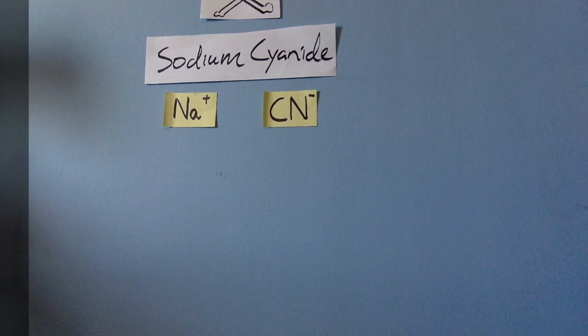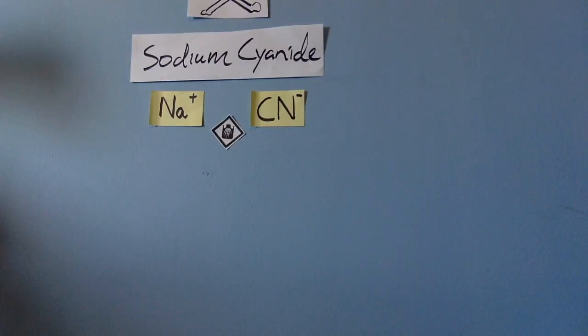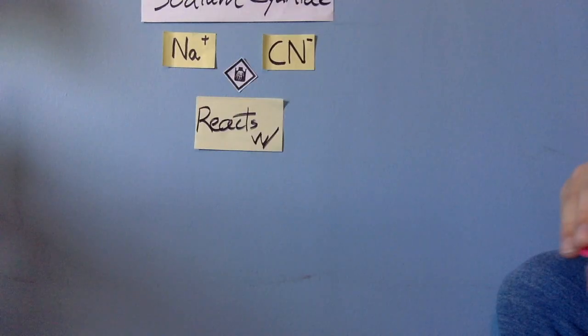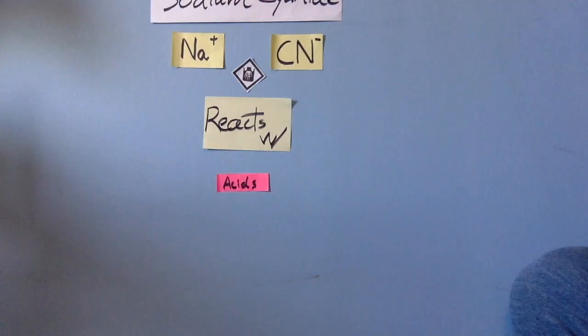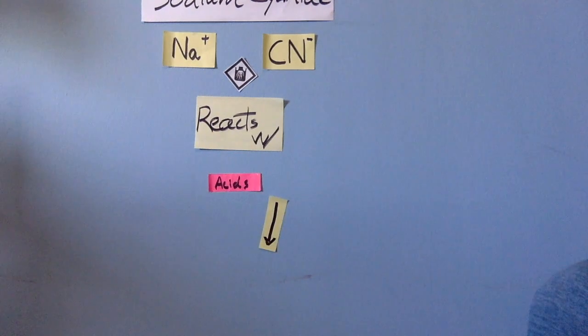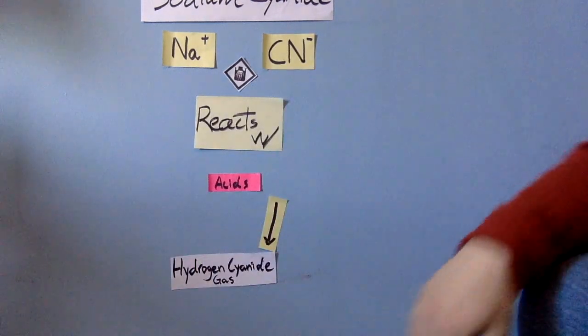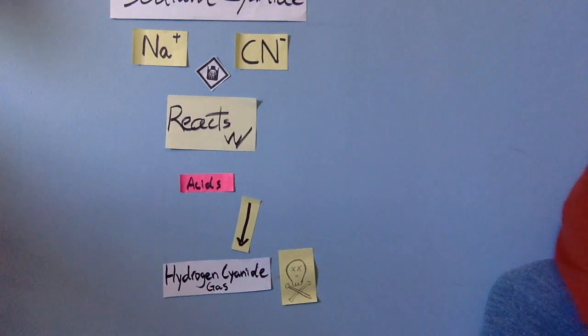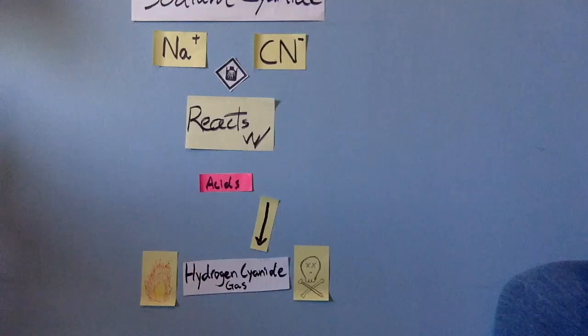Sodium cyanide is an extremely strong base which means it is extremely corrosive and reacts violently with acids. Hydrogen cyanide gas is formed from this reaction and it is extremely toxic and very flammable.